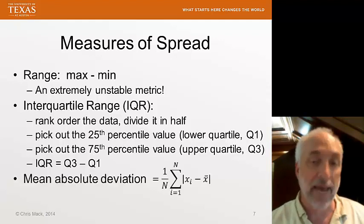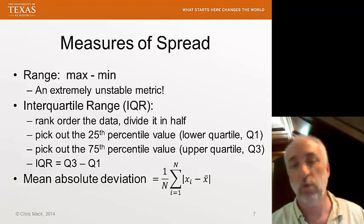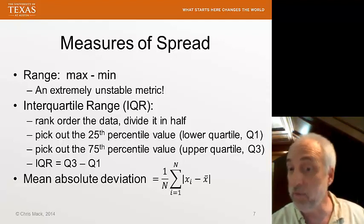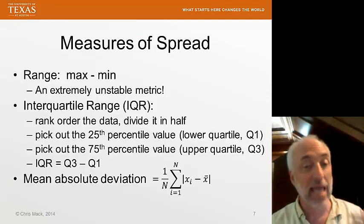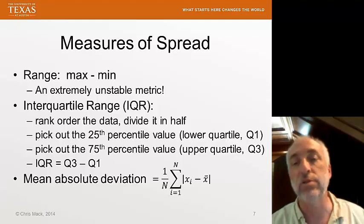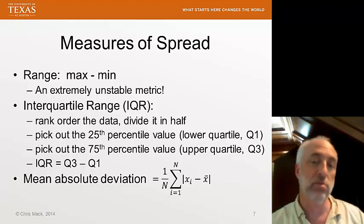There is something called the mean absolute deviation. So we take our data point, subtract off the mean, and then take the absolute value of that deviation. Then we find the average of all the absolute deviations, and that's the mean absolute deviation.